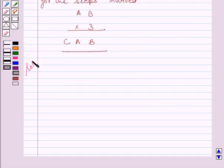Let us now move on to the solution. First of all, we will rewrite the given puzzle. It is AB multiplied by 3 gives CAB.